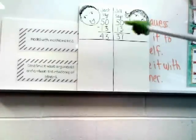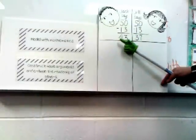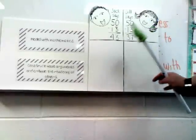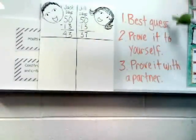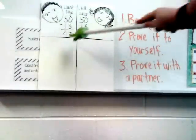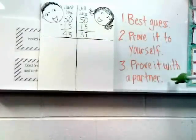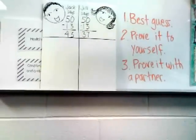It's a great fun activity that takes very little preparation. To recap: our two overarching standards are 'model with mathematics' and 'construct viable arguments and critique the reasoning of others.' Our three-step process for Jack and Jill Problems: give your best guess and write it down; prove it to yourself and move yourself if you need to; and finally, prove it with a partner or team, and again, move yourself if you want to. Thank you so much for watching, and have a great day.